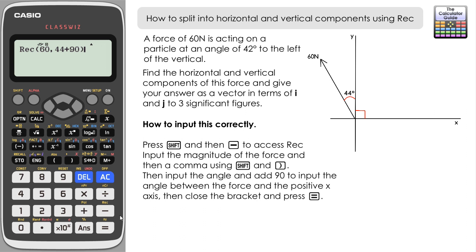Pressing equals gives slightly different but similar figures. Our x, which is now the horizontal component, is minus 41.7 to three significant figures — this is our i vector heading left, so we give it as negative. Notice that 41.7 was the y result (positive) when we did it previously. The y result, which was the x result before and was positive, remains positive — meaning the vertical component of the force is going upward. So the j component is 43.2j. Together: minus 41.7i + 43.2j.